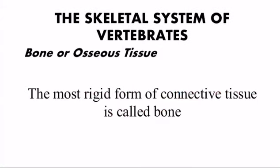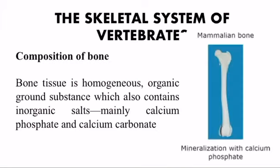Bone, or osseous tissue, is the most rigid form of connective tissue. Bone tissue is a homogenous organic ground substance which also contains inorganic salts, mainly calcium phosphate and calcium carbonate.